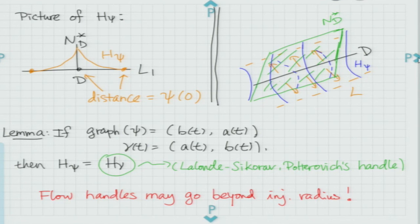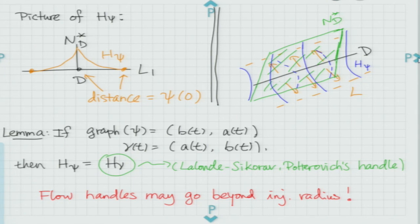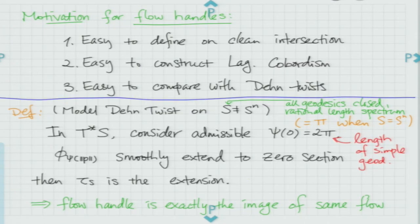If you choose psi to be admissible in the sense of Polterovich-Lalonde-Sikorav and Biran-Cornea, then the Lagrangian handle that you flow out — the flow handle — is the same as the handle that they attach in the Darboux chart. One point is that our flow handle can actually go beyond the injectivity radius. For them, it's very important to restrict to the Darboux chart and implant a local model, which is just T* R^n.